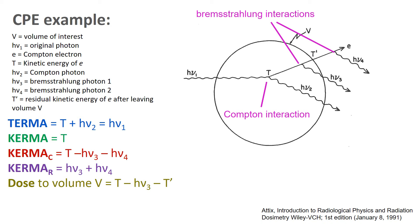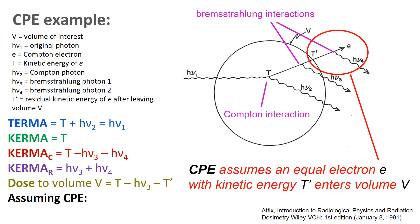Dose to volume V is more complicated — you have to subtract out the residual kinetic energy, so it equals T minus h-nu-3 minus T-prime. Now, if we assume charged particle equilibrium, we take that electron that has left the volume with kinetic energy T-prime and assume that an equal electron with kinetic energy T-prime is going to enter the volume somewhere else.